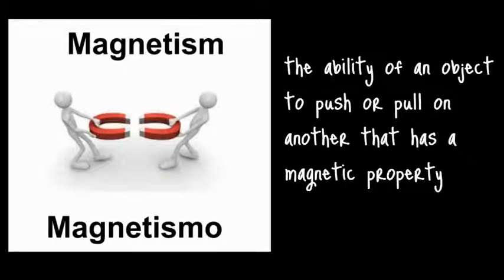Our next word is magnetism. Magnetism is the ability of an object to push or pull on another that has a magnetic property. So in this image, we see two magnets and then we see these two figures on the side holding them.